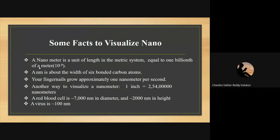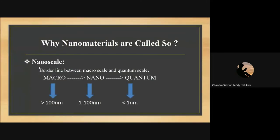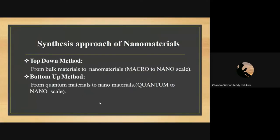The nanoscale is the borderline between macro scale and quantum scale. At macro scale, size is greater than 100 nanometers; at quantum scale, size is less than one nanometer. Nanoscale ranges from 1 to 100 nanometers — where at least one dimension of any material falls within this range, those materials are considered nanomaterials and that scale is considered nanoscale.